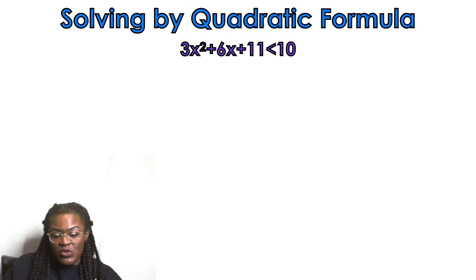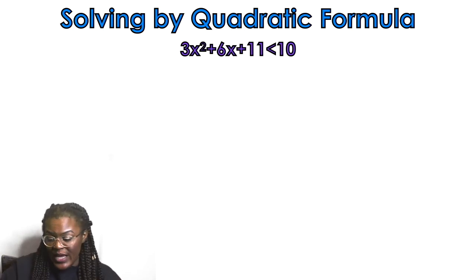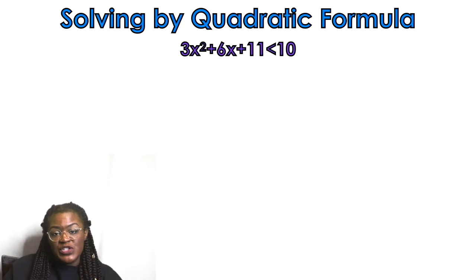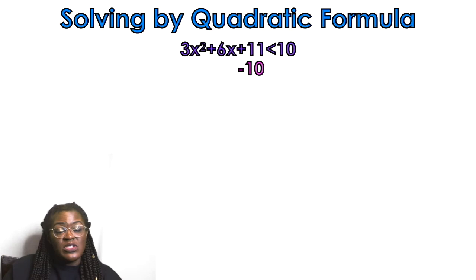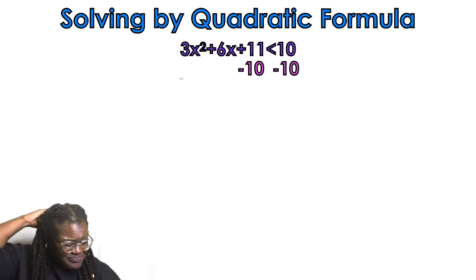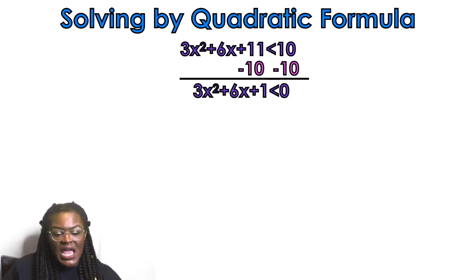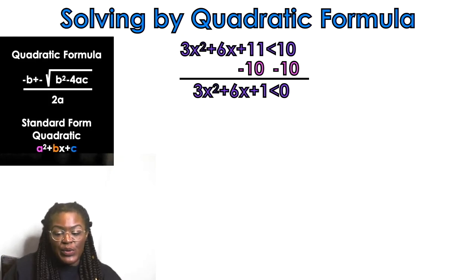Pause the video and see if you can do example two on your own. The first thing you want to do is set it equal to 0 — just like factoring. Subtract 10 from both sides to get 3x squared plus 6x plus 1 is less than 0. Here's the quadratic formula ready to go.